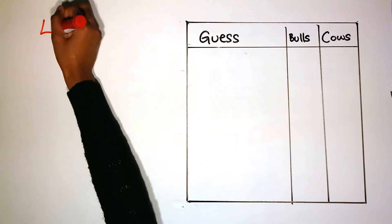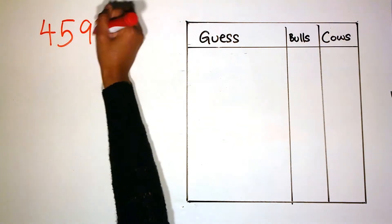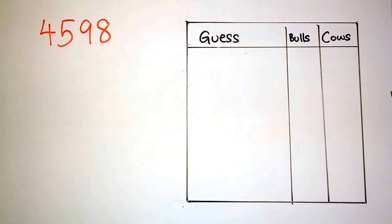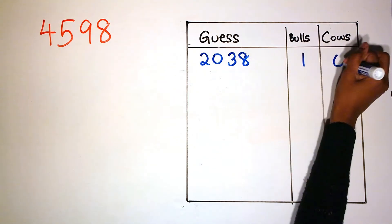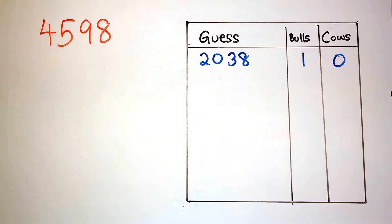For example, if my opponent's number was 4598 and my first guess was 2038, I would have one bull and zero cows. This means I have one number at the correct position and three wrong numbers.